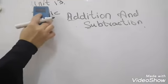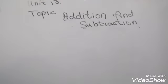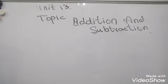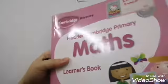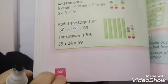Today's lesson is about unit 13. Topic is addition and subtraction. Your learner book page 140. So let's start.